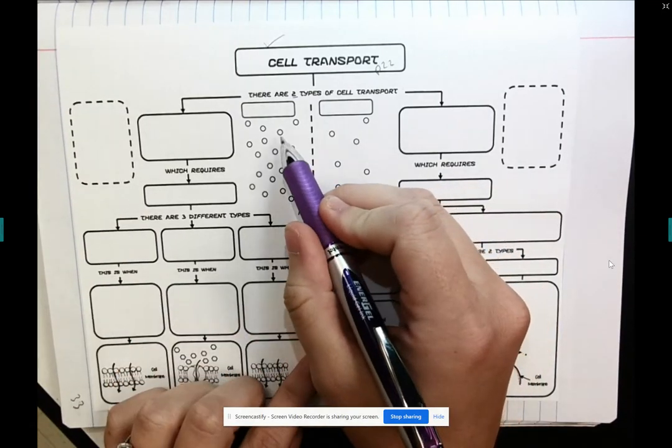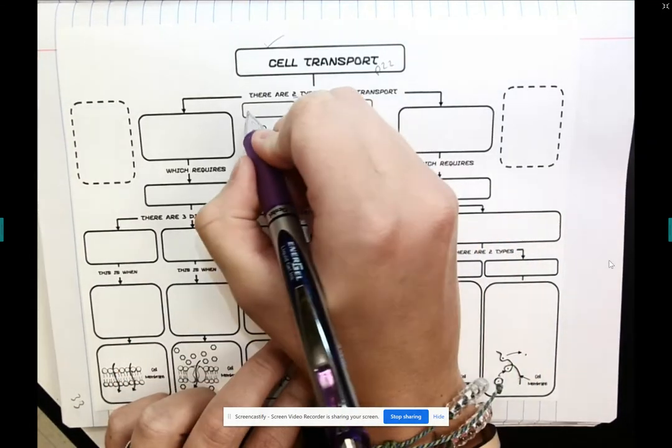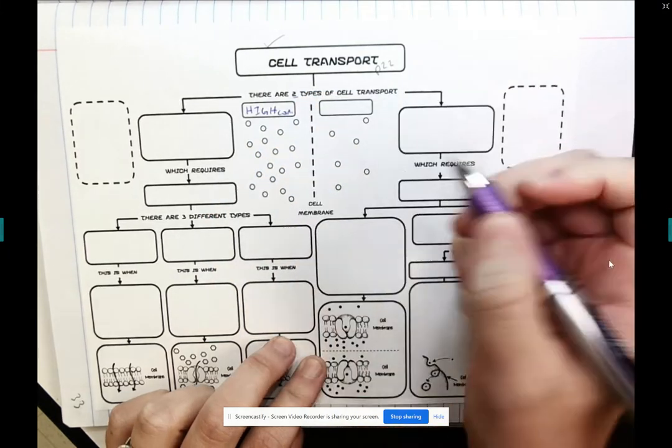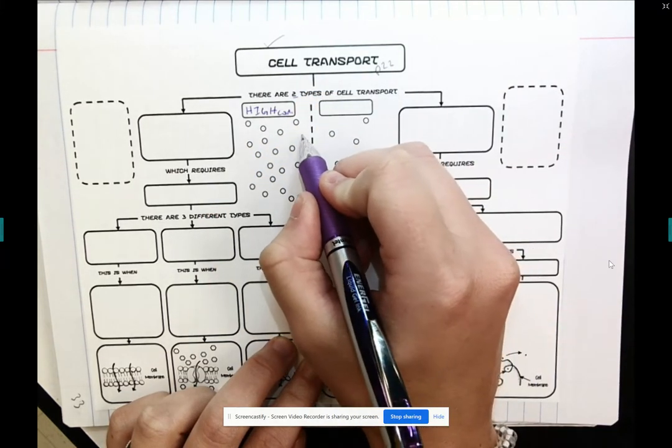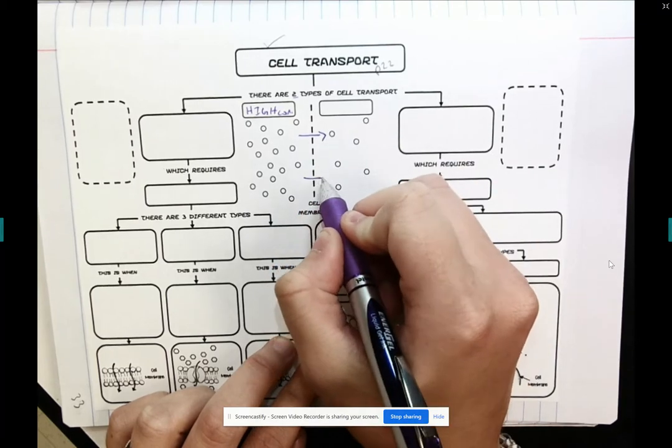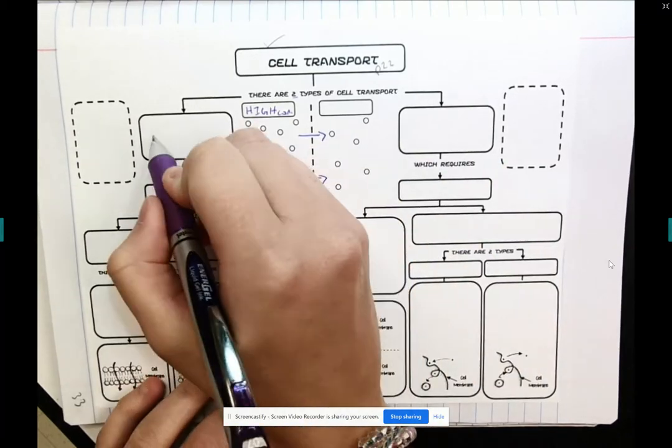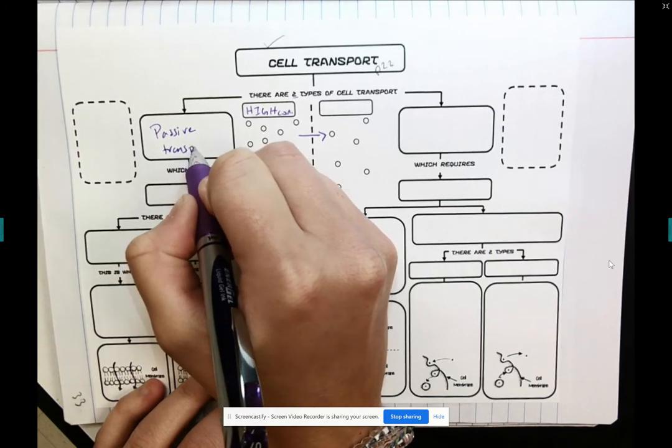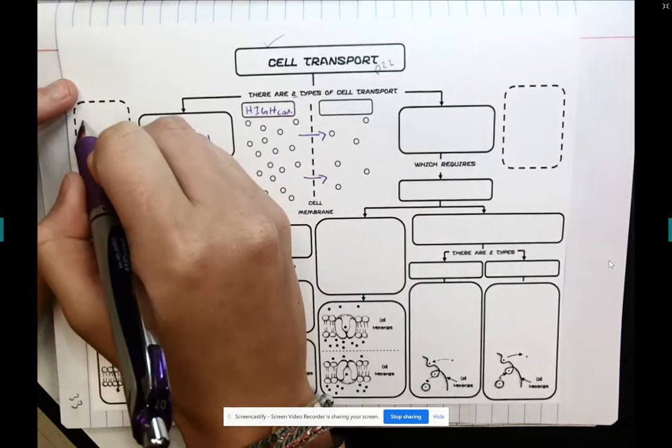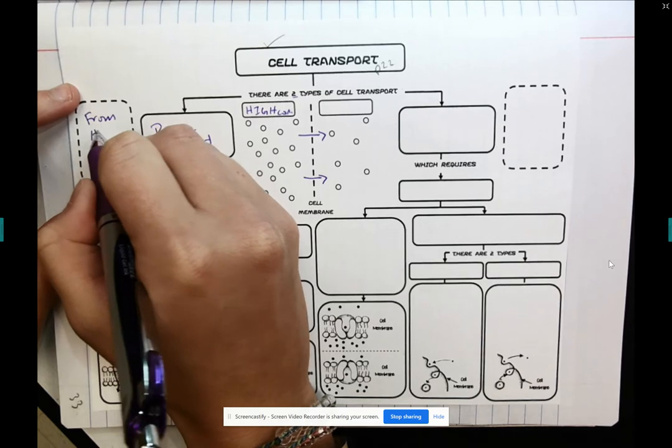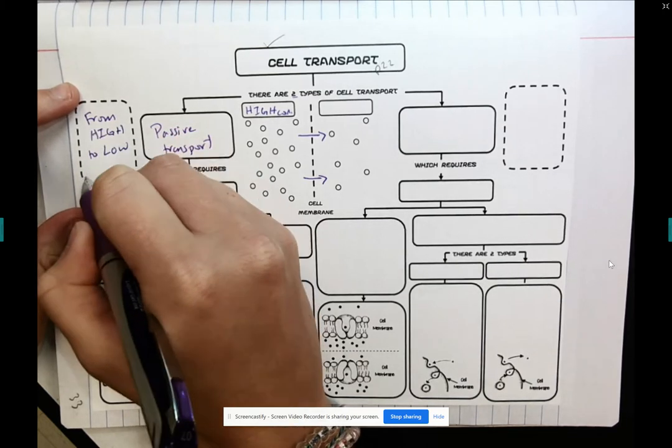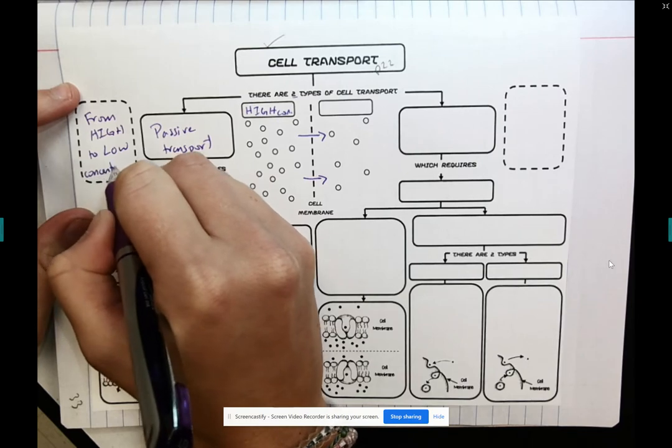If we're moving from an area of high concentration, moving this way, then we know that that is called passive transport. Because we are moving from high to an area of low concentration.